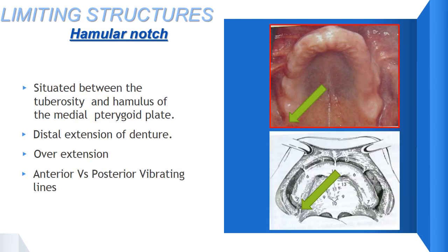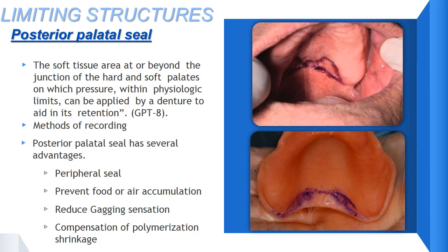The hamular notch is considered the most distal limiting structure of the maxillary denture. It is situated between the tuberosity and the hamulus of the medial pterygoid plate, and is considered the distal termination of the maxillary denture. Any overextension beyond this point will lead to impingement of the soft tissue or pterygoid plates. The posterior palatal seal is the posterior-most limiting structure of the maxillary denture, defined as the soft tissue area at or beyond the junction of the hard and soft palates on which pressure within physiological limits can be applied by a denture to aid in its retention.